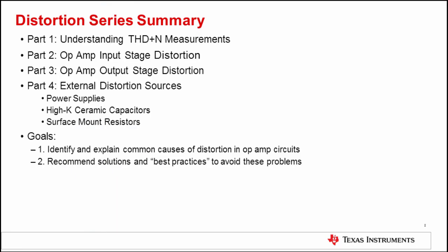This video series covers the important topics related to distortion in op-amp circuits. In this video, we will define and introduce total harmonic distortion plus noise, commonly referred to as THD plus N. We will look at the way it is calculated and examine typical datasheet curves for THD plus N. In the next video, we will cover distortion caused by the op-amp's input stage. The third video covers distortion from the op-amp's output stage. The fourth video will cover external sources of distortion which can come from power supplies or external components like resistors and capacitors. The goals for this series are to identify and explain common causes of distortion in op-amp circuits, and then to recommend solutions and best practices to avoid these problems.